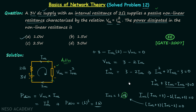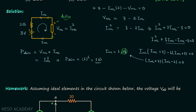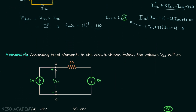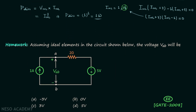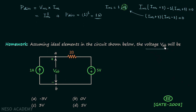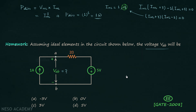This concludes the solution. For the homework problem, you are required to find the voltage V_AB — that is, the potential difference between point A and point B. Once you have your answer, post it in the comment section.